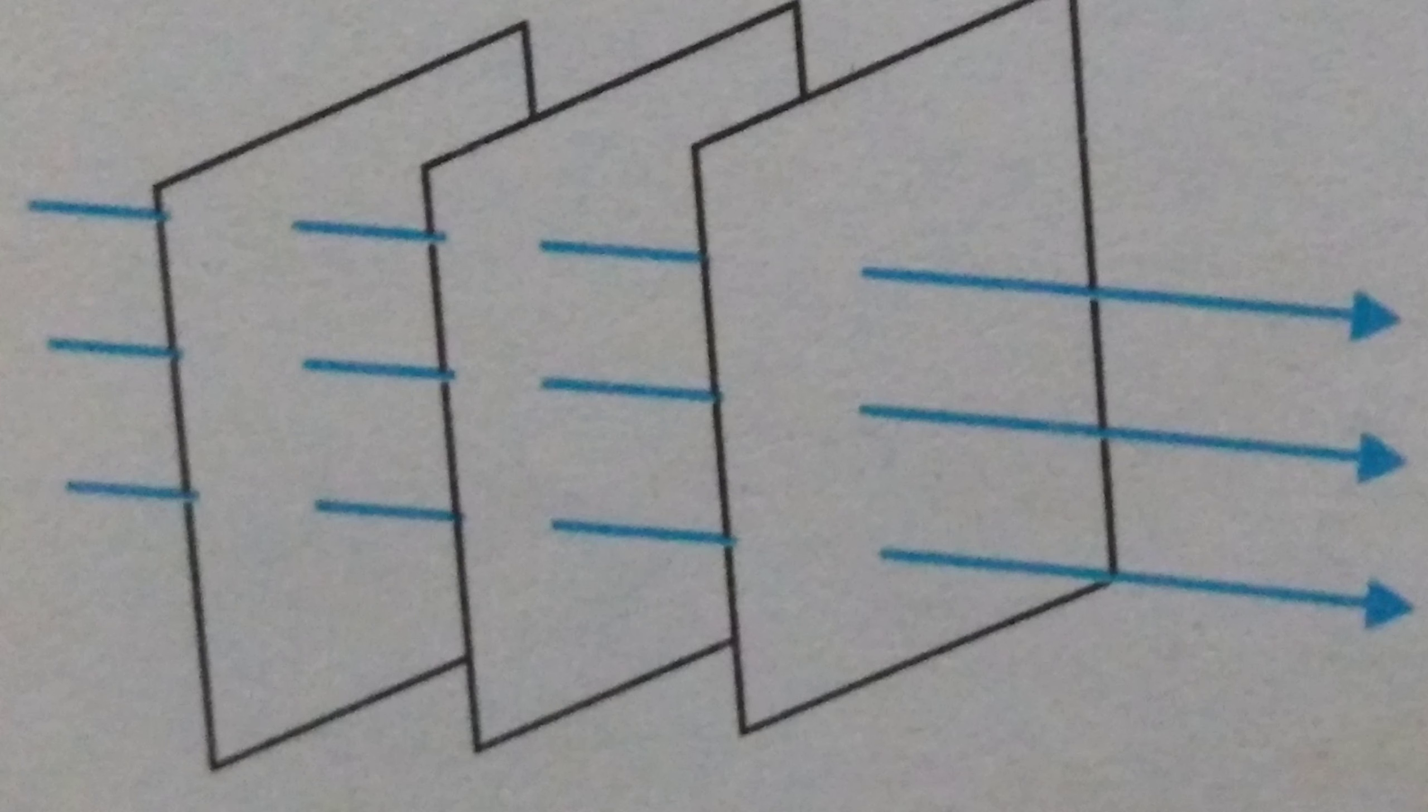For a sinusoidal plane wave, the wavefronts are planes perpendicular to the direction of propagation. The wavefronts move in the direction of the wave. In the picture you can see how the wavefront is moving in the direction of the wave.